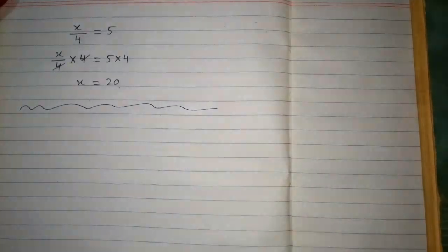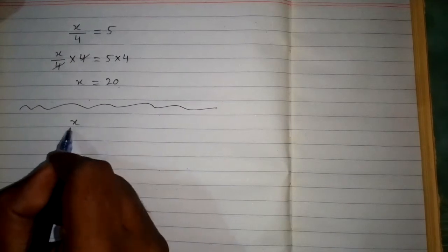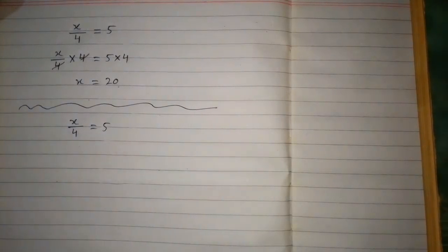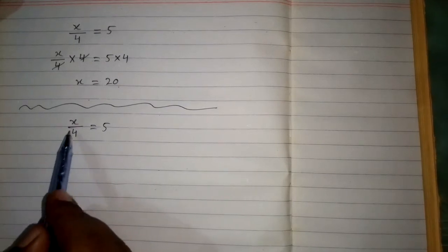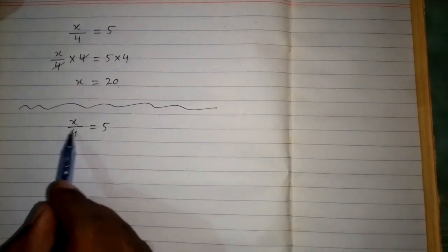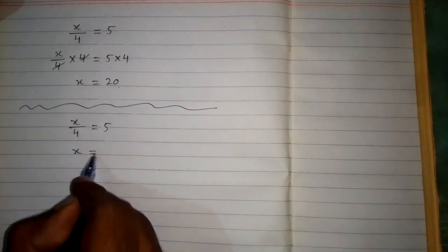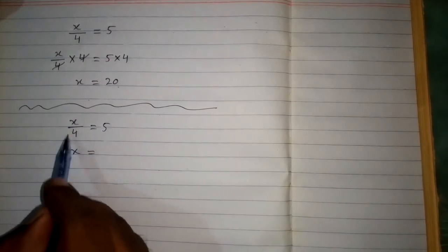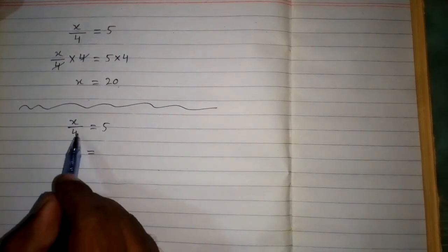We can also use another method for finding the solution of this equation. So we have x upon 4 is equal to 5. Here we can see that 4 is in the denominator, or we can say that x is divided by 4. So we can take this 4 on the other side of the equation, and since 4 divides x.